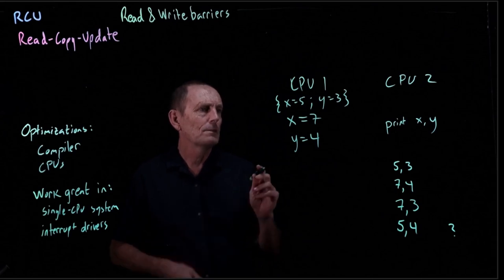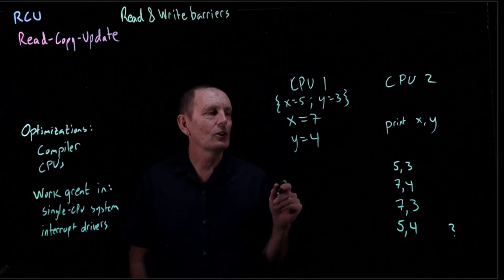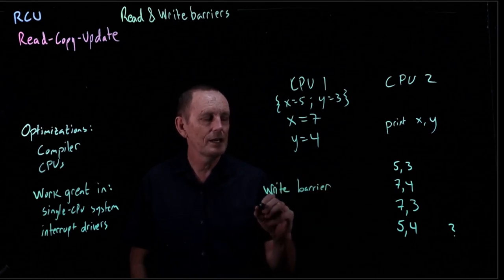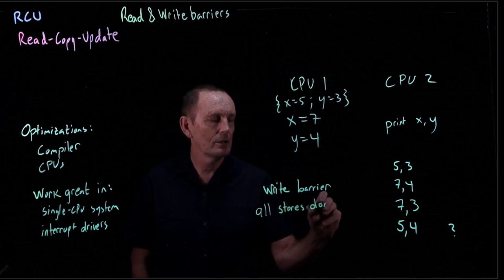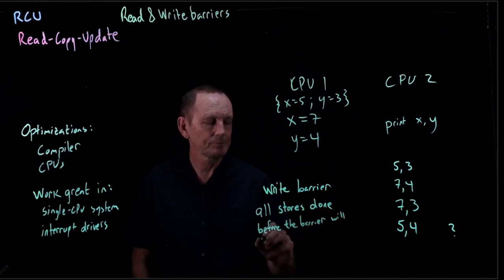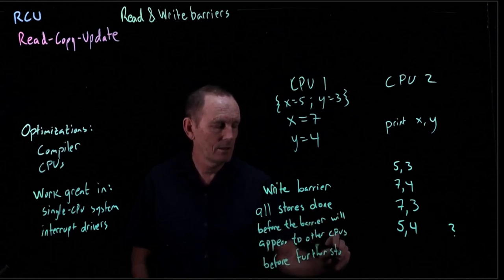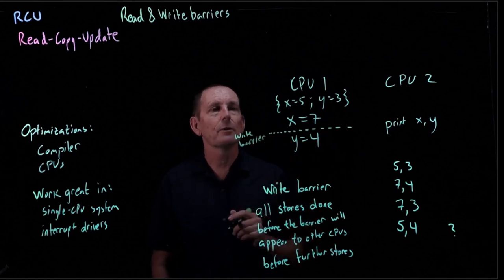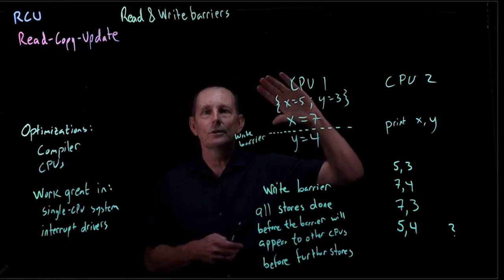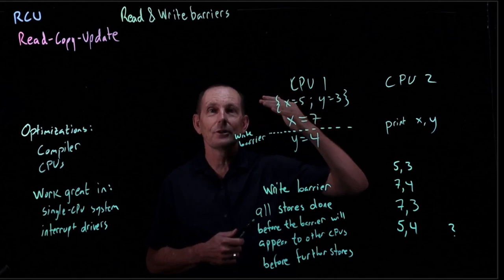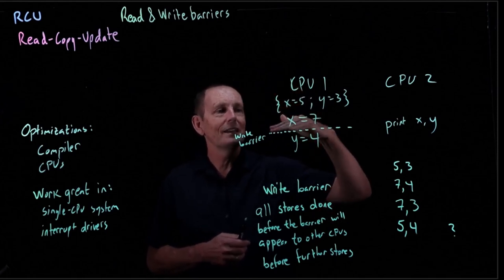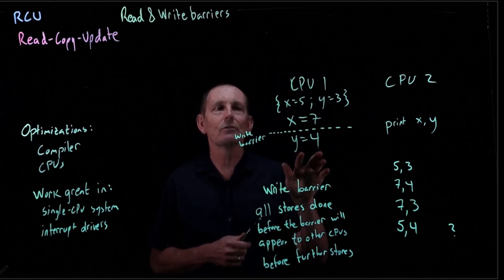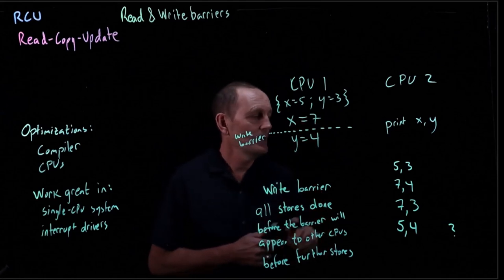So there exists something called a write barrier. So this is for CPUs. A write barrier says all stores that are done before the barrier will appear to other CPUs before further stores. So the way to think of it, let's add a write barrier here. So if we had a write barrier here, that will basically, still before the write barrier, the CPU can go ahead and reorder any stores that happen. And by stores, I just mean assignments to memory locations. But it can't move any of those assignments past the write barrier. So what that means is, by the time we do the store of y equals 4, this store of x equals 7 will have happened.